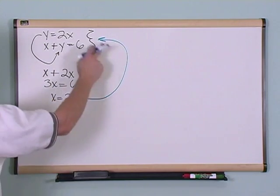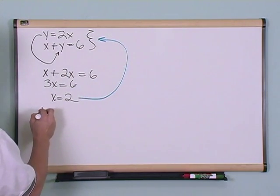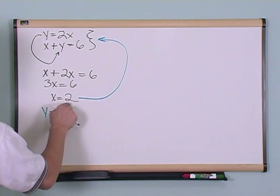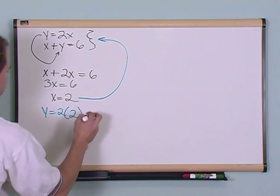I've taken, I know that x is equal to 2, let's say I put it up into this top equation. Y is equal to 2 times x, x is given by 2 here. We just found that. That's equal to 4.